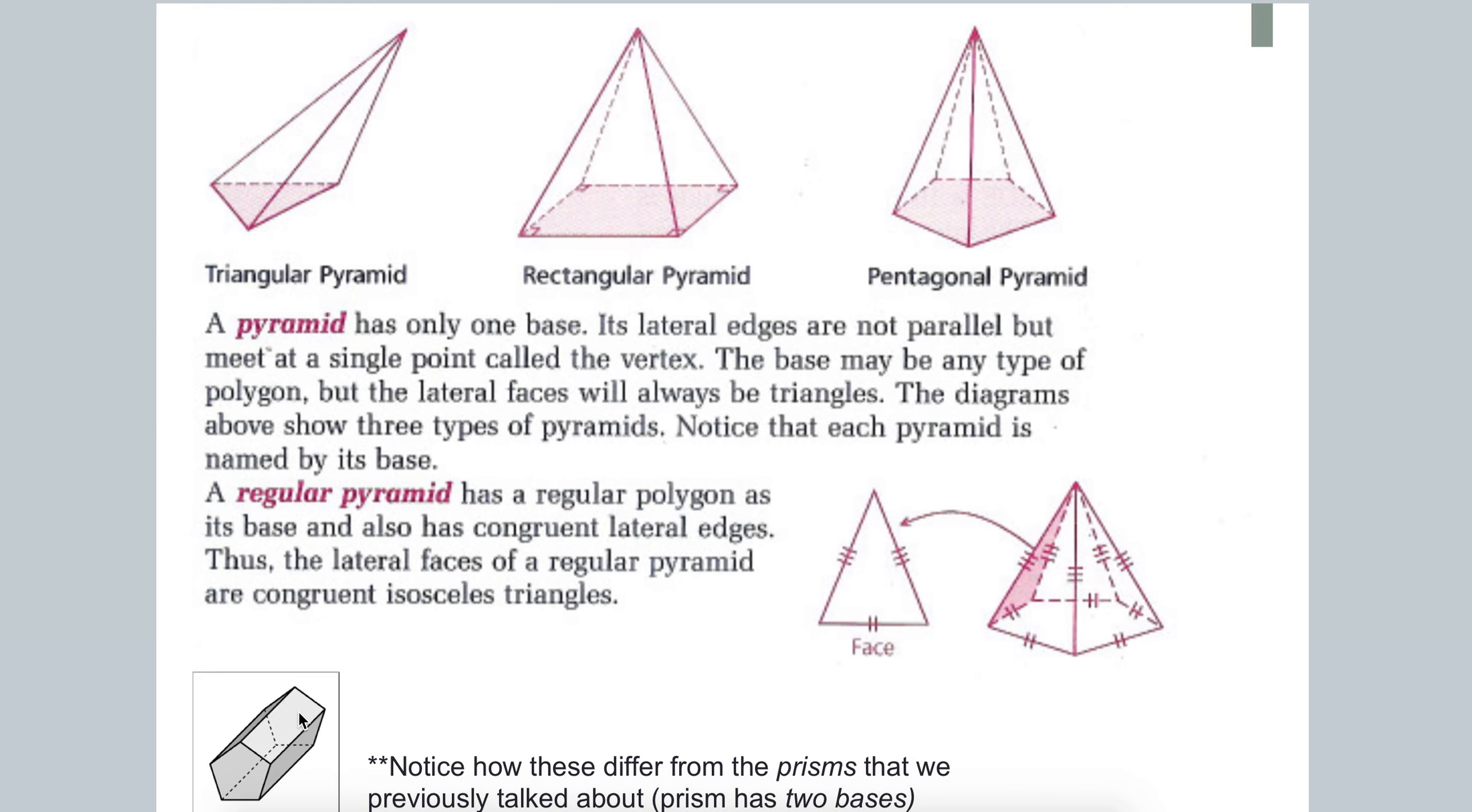So when we talk about regular pyramids, a regular pyramid means that its base is regular. So for example, here, if we call it a regular pentagonal pyramid, it means the base is a pentagon.